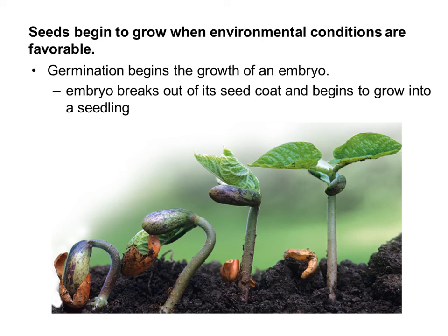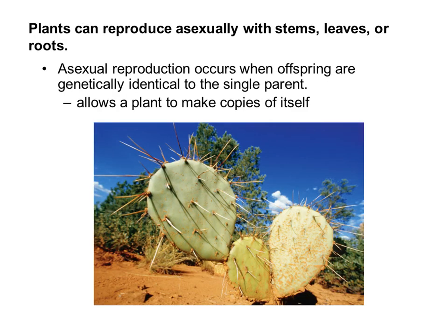The embryo breaks out of its seed coat and begins to grow into what we call a seedling. This picture shows the seed coat of a bean plant falling off and lying at the ground next to the plant. The type of reproduction we just talked about was sexual reproduction because it involved two parents — an egg and sperm. Asexual reproduction can also occur with some plants, when offspring are genetically identical to a single parent, allowing plants to make copies of themselves.